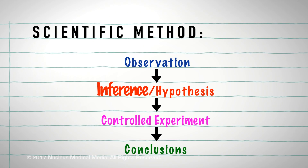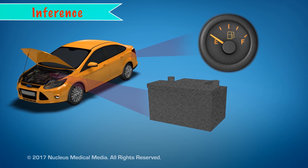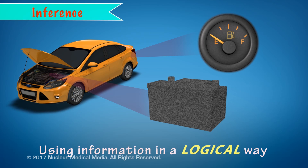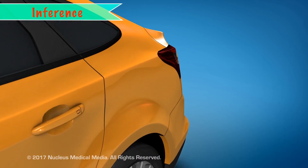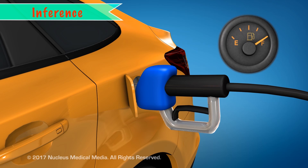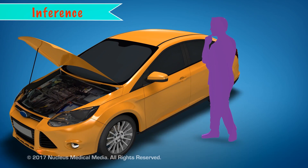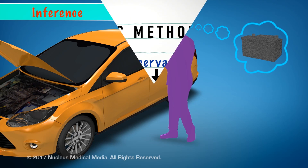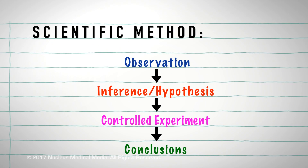You could use an inference to possibly eliminate one of these things. Using an inference means to apply information in a logical way to reach a conclusion. In this example, your inference might be that the problem isn't a lack of fuel because you know you filled the gas tank yesterday and haven't driven the car very far since then. Your inference that a lack of fuel isn't the cause may lead you to think the problem might be a dead battery.